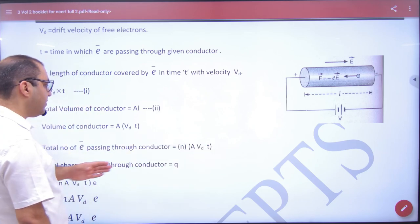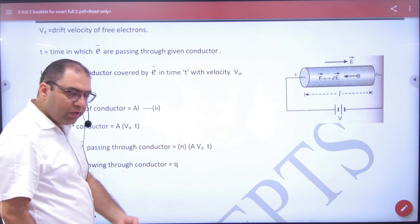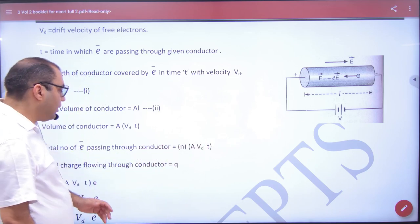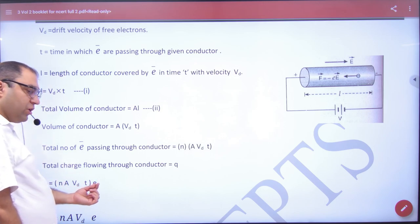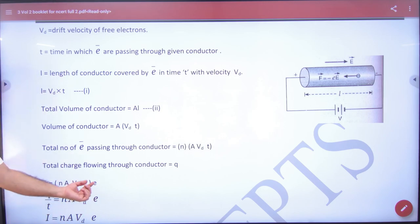Click on the side here. N is equal to number of electrons per unit volume into volume of conductor. Number of electrons came. So one electron has charge e, total electron charge is into e.